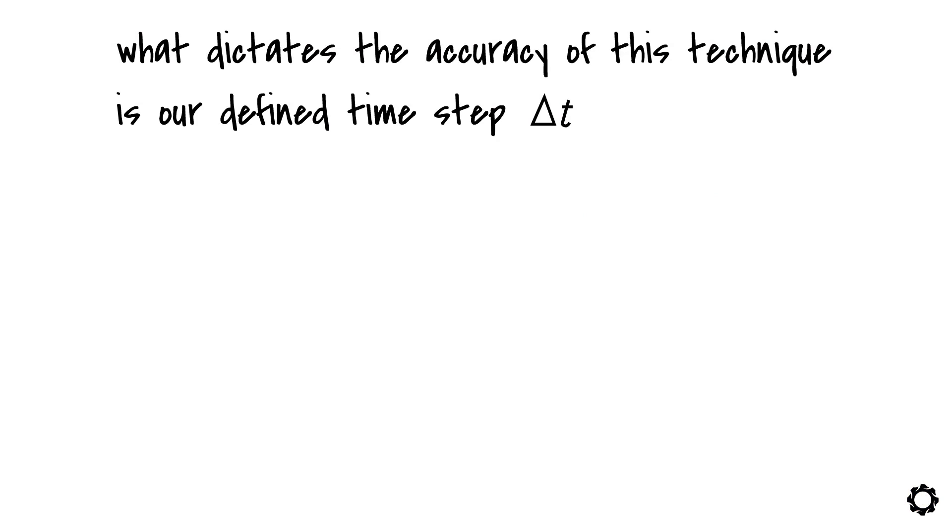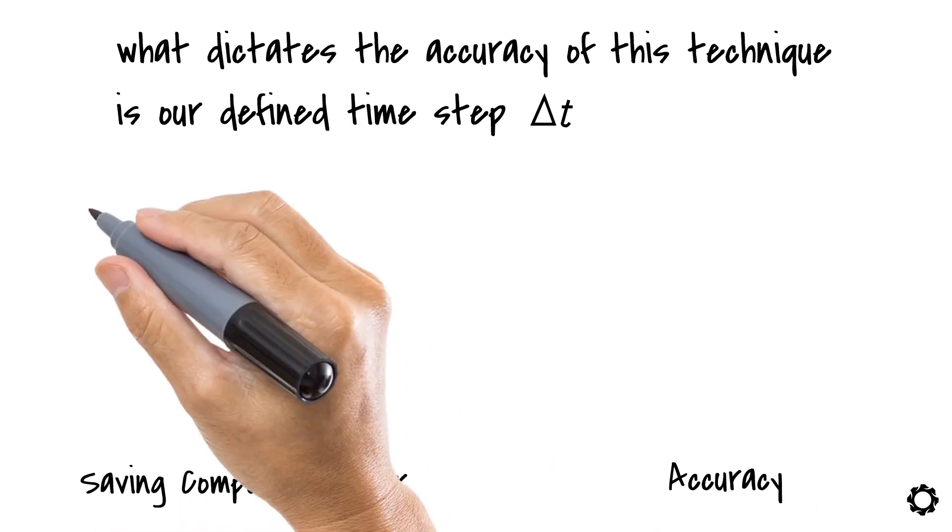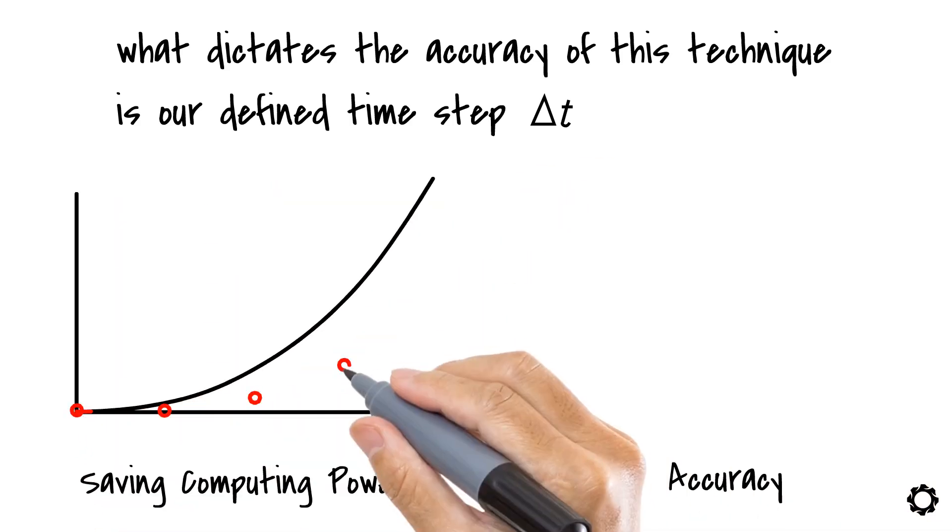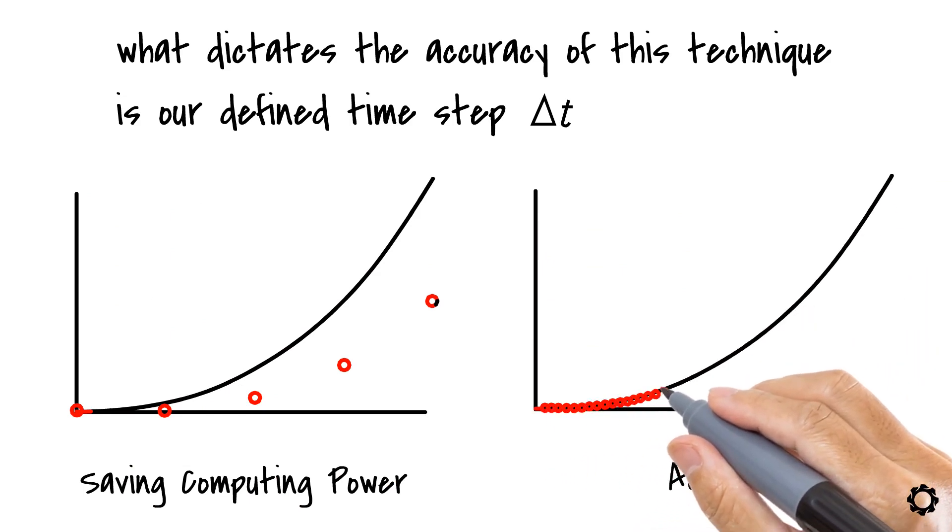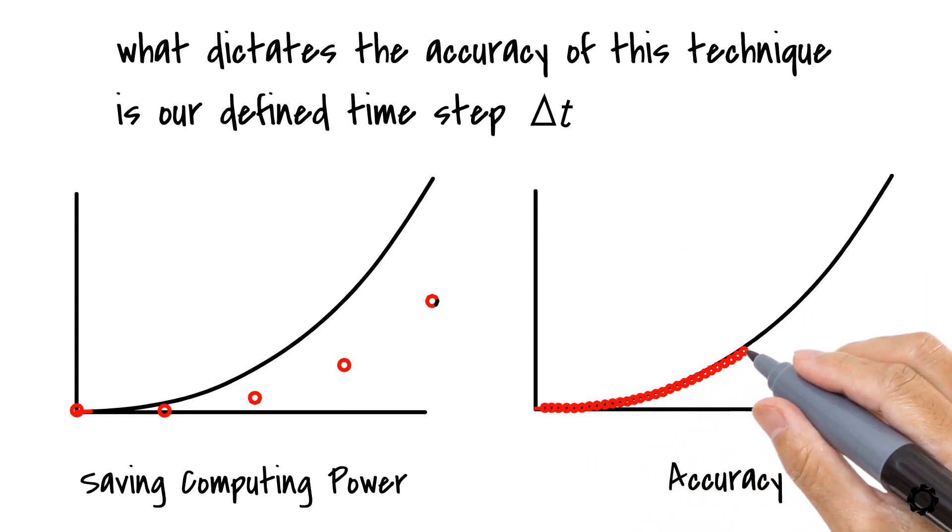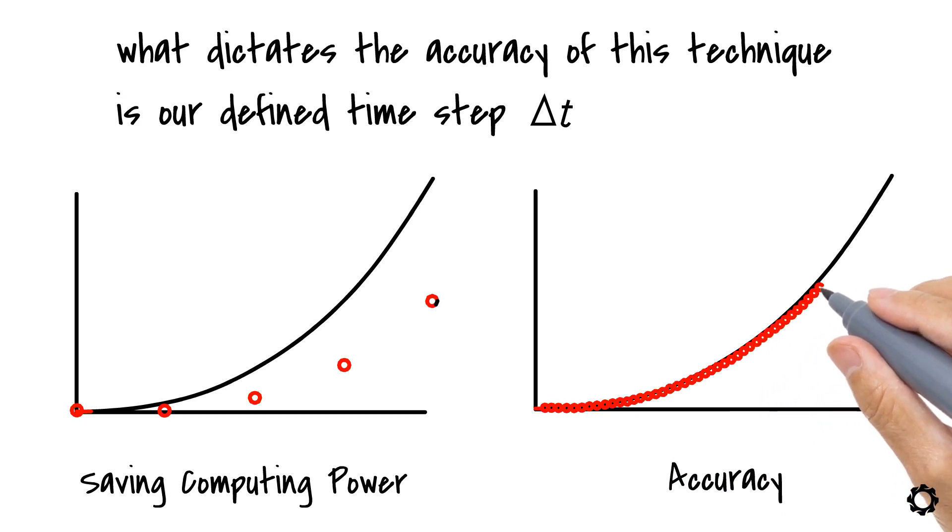Usually, we need to make some compromises between the accuracy and the computing power. Using big time steps can help us save computing resources, but the accuracy of the obtained solution curve will not be that good. In cases where we are approximating more complex response curves, it is mandatory to use quite small time steps to avoid cumulative errors.